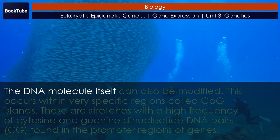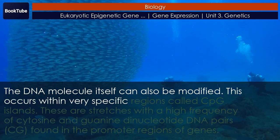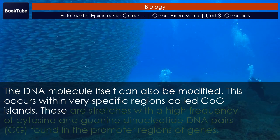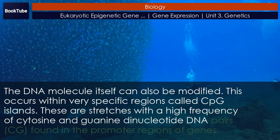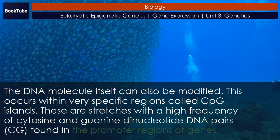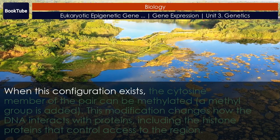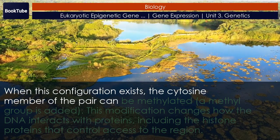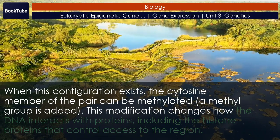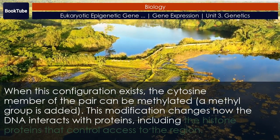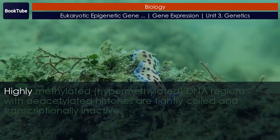The DNA molecule itself can also be modified. This occurs within very specific regions called CpG islands — stretches with a high frequency of cytosine and guanine dinucleotide DNA pairs found in the promoter regions of genes. When this configuration exists, the cytosine member of the pair can be methylated — a methyl group is added. This modification changes how the DNA interacts with proteins, including the histone proteins that control access to the region.